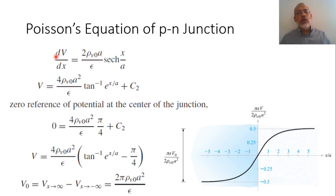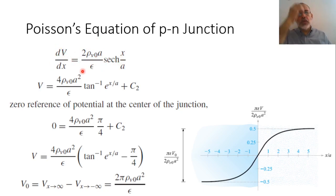Now, we have dV/dx equals (2 * rho_V0 * A / epsilon) * sech(x/A). By integrating both sides, we obtain the potential V equals (4 * rho_V0 * A² / epsilon) * arctan(e^(x/A)) plus a new constant C2.